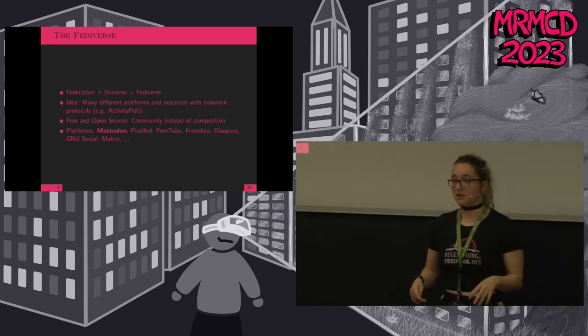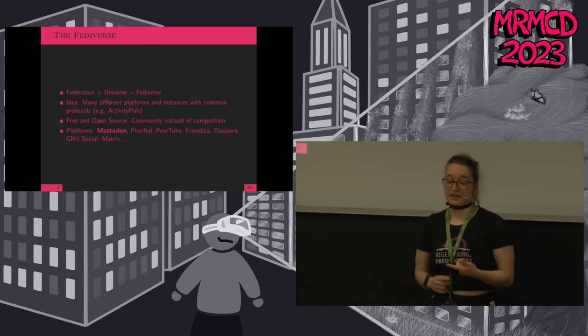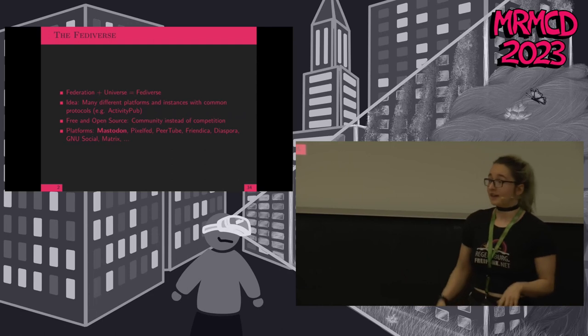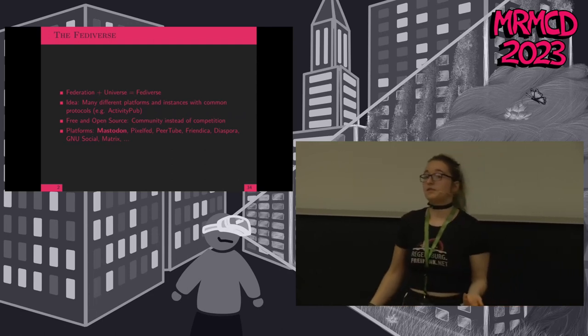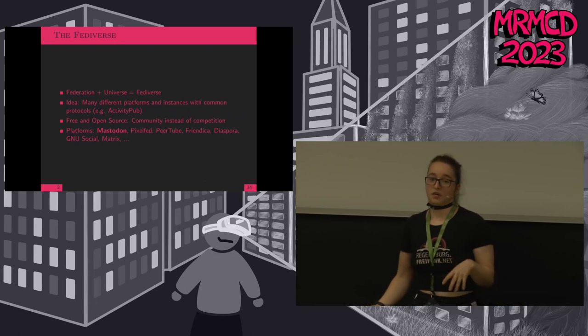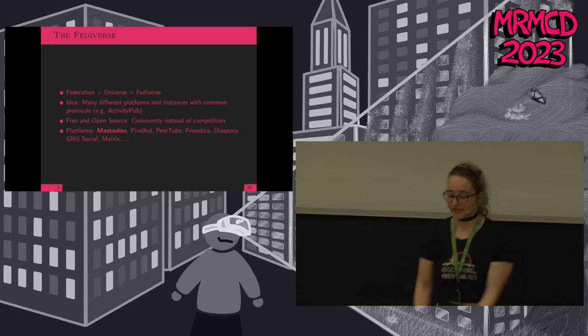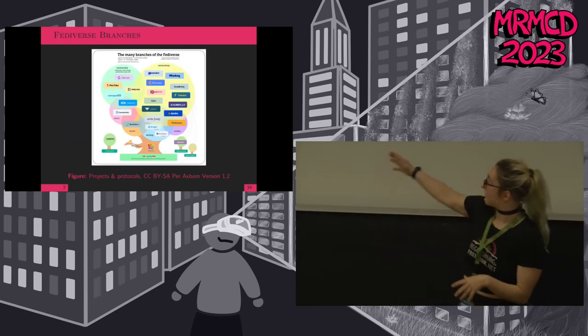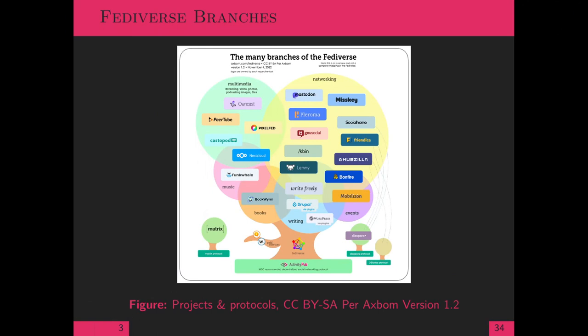There are several other protocols like the OStatus protocol or the Diaspora protocol, and Matrix has its own protocol since it's more of a messaging platform than decentralized social media. Just to give a short impression, I have the tree of Fediverse branches here. The Fediverse consists mostly of ActivityPub platforms, but just to clarify, the Fediverse is not only Mastodon.